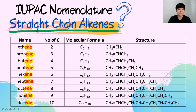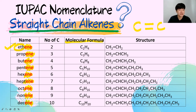For straight-chain alkenes, the spelling changes from -ane to -ene. Alkene naming starts with ethene because a carbon-carbon double bond must hold at least 2 carbons. The molecular formula follows CnH2n: C2H4 (ethene), C3H6 (propene), C4H8 (butene), and so on.